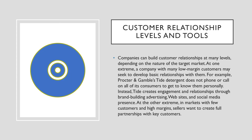Customer relationship levels and tools. Companies can build customer relationships at many levels, depending on the nature of the target market. At one extreme, a company with many low-margin customers may seek to develop basic relationships with them. For example, Procter & Gamble's Tide detergent does not phone or call on all of its consumers to get to know them personally. Instead, Tide creates engagement and relationships through brand-building advertising, websites, and social media presence. At the other extreme, in markets with few customers and high margins, sellers want to create full partnerships with key customers.